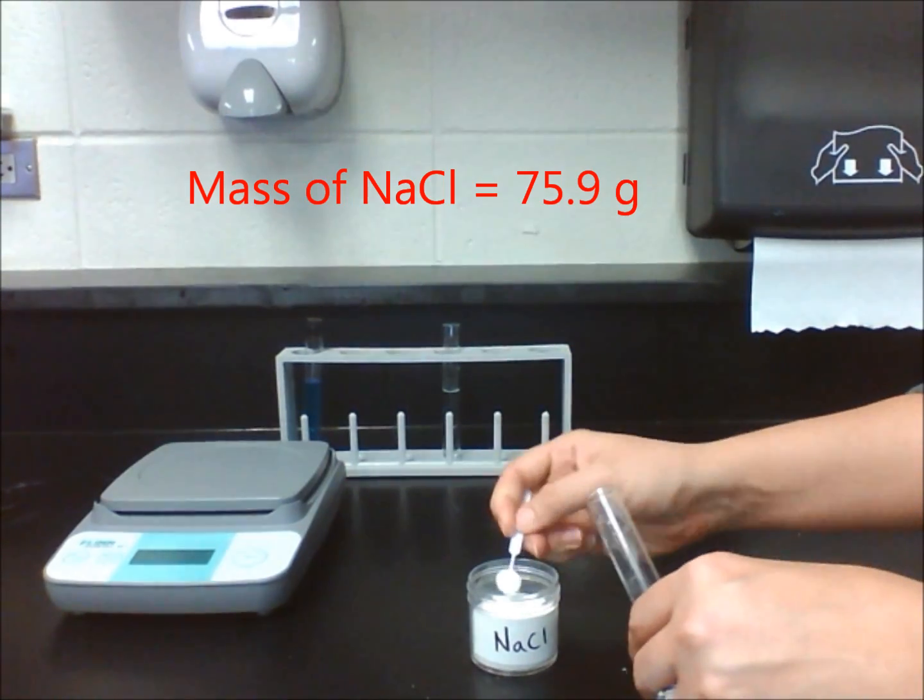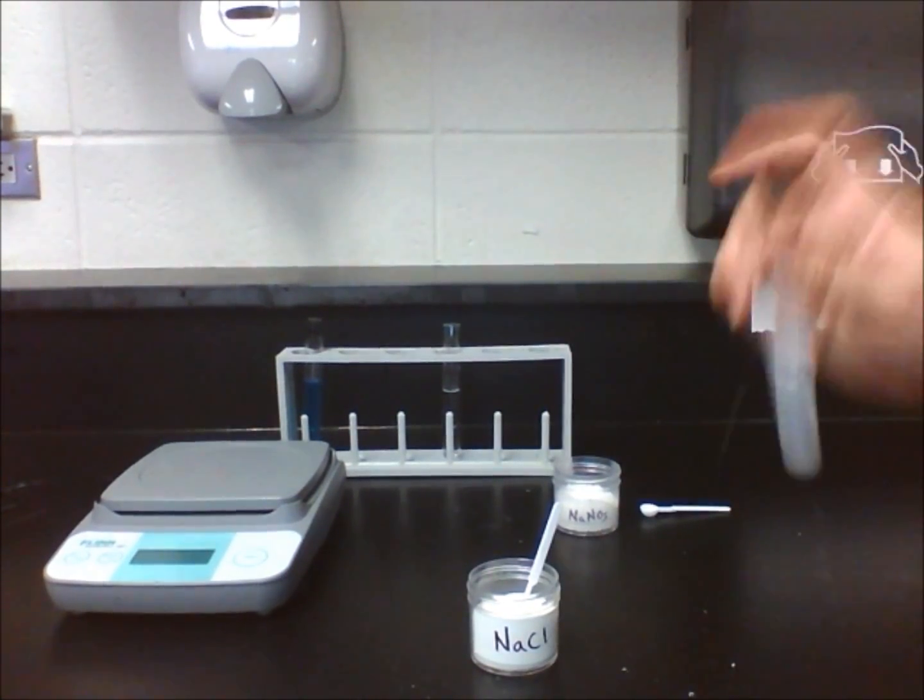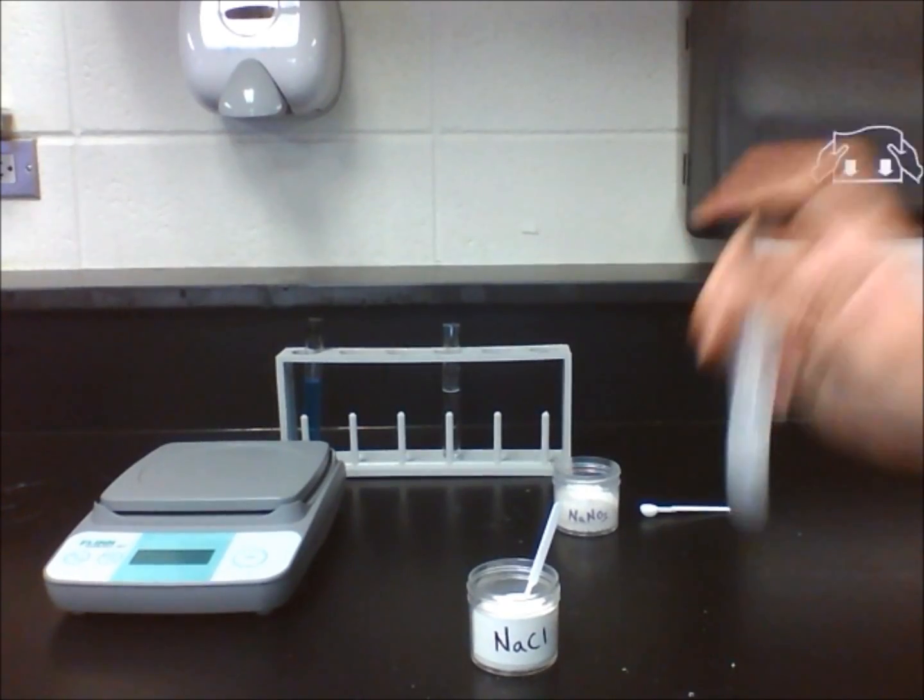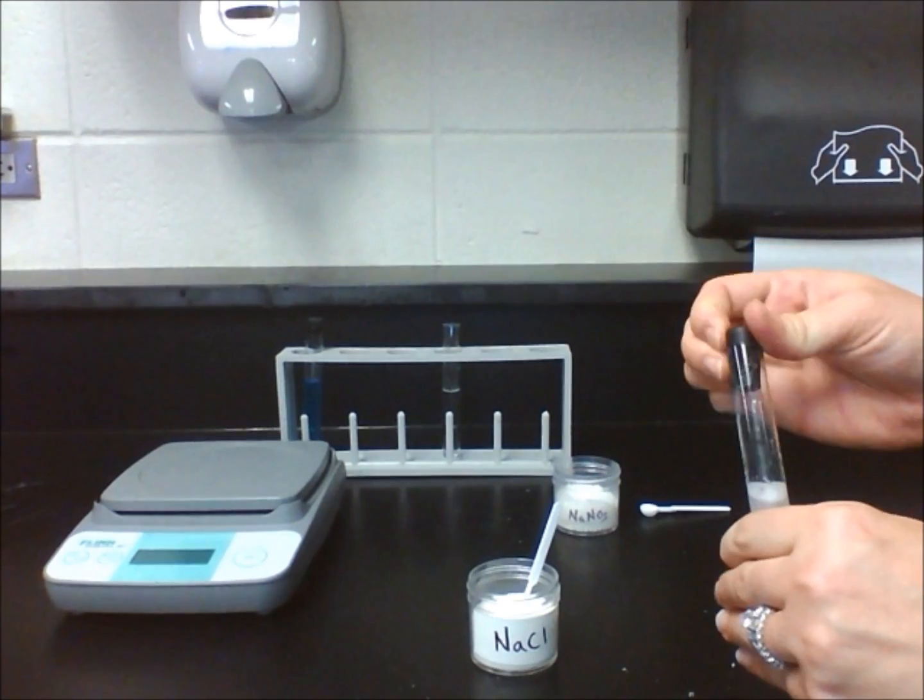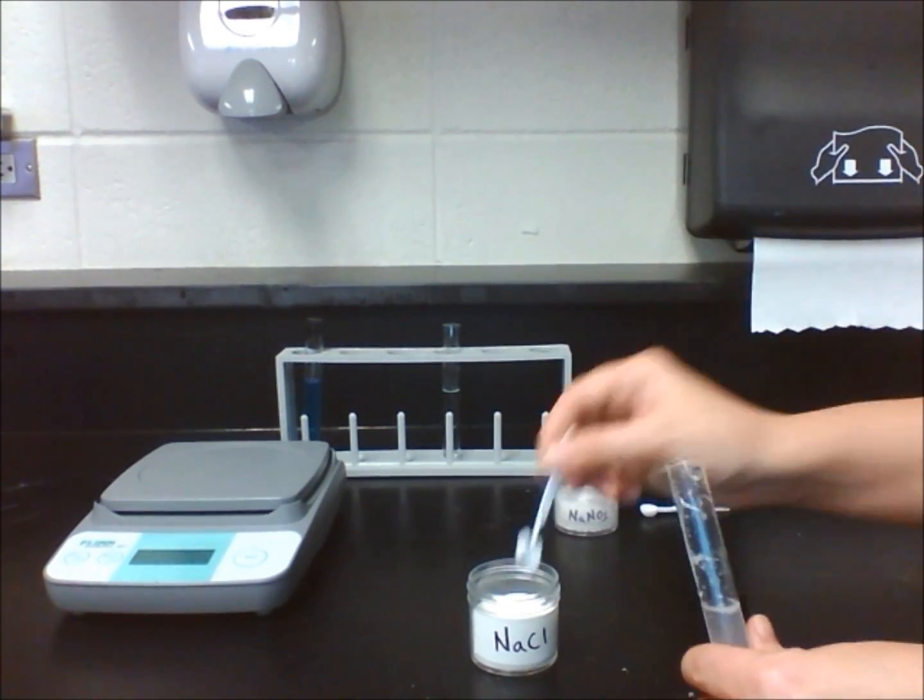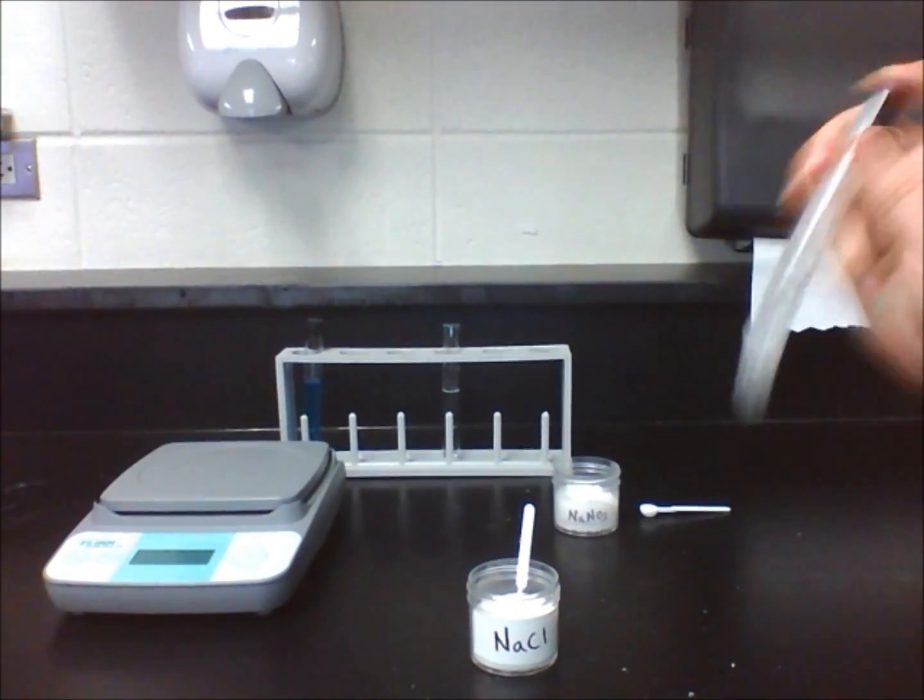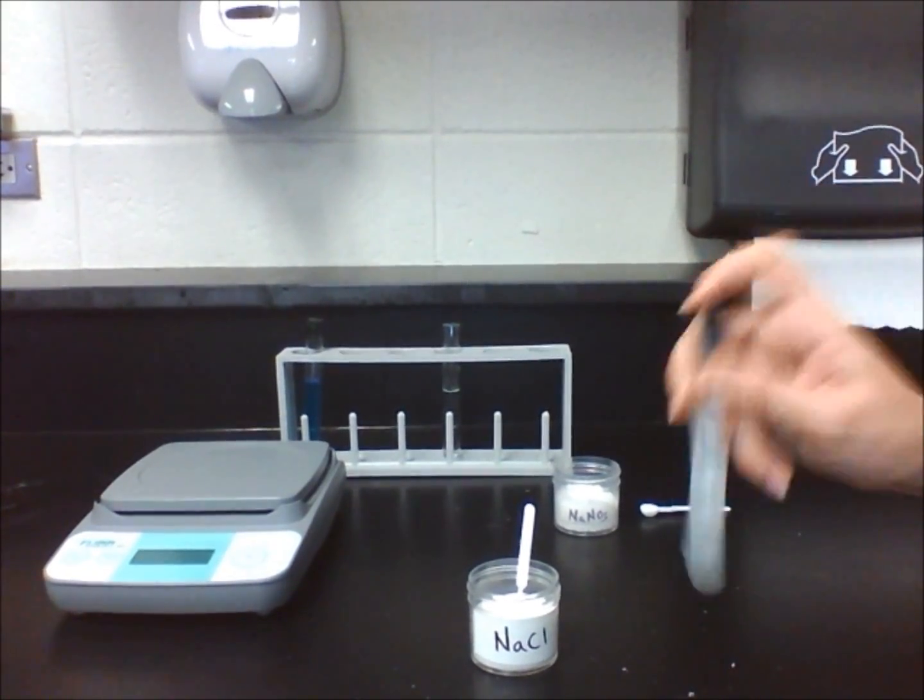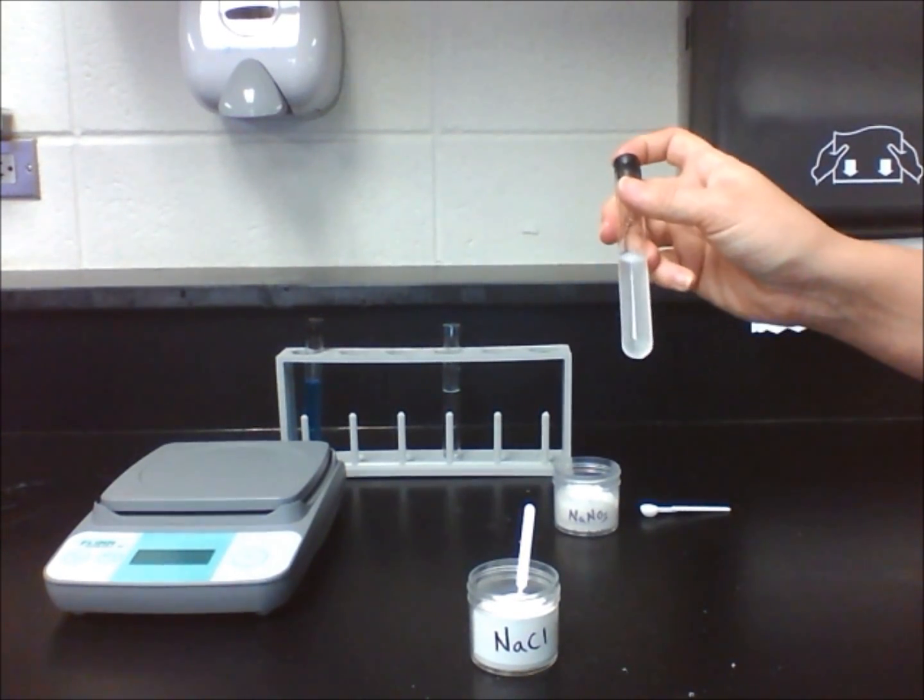Keep adding scoops one scoop at a time until no more can dissolve so that we have a saturated solution. Once we do have a saturated solution, mass the jar of salt on a scale, then record the mass. Subtract the original mass minus the new mass to get the mass dissolved.